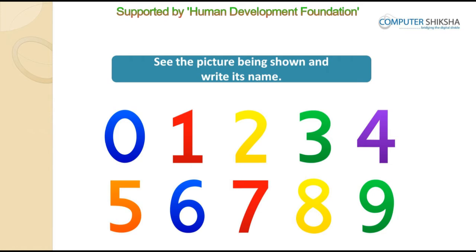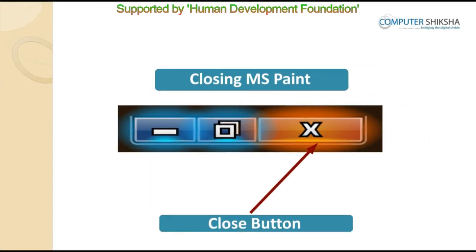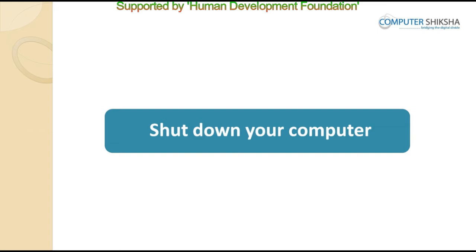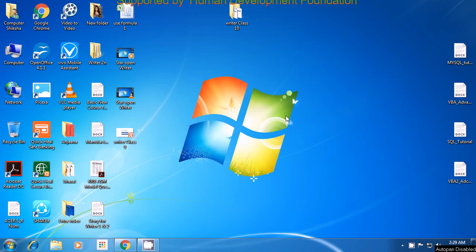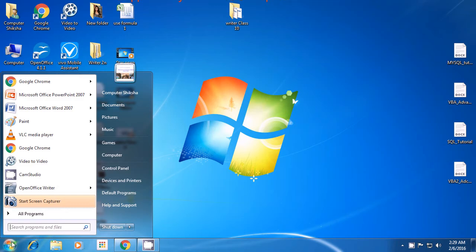Today's class ends here. All of you should now properly close your MS Paint files and then properly shut down your systems. If you are having any problems doing this, watch the video and learn the method for shutdown. Bring your pointer to the Start button as shown in the video, then use your mouse or touchpad to click the left button. A box appears — look for the Shutdown option, take your pointer there, and click with the left button to shut down your computer.